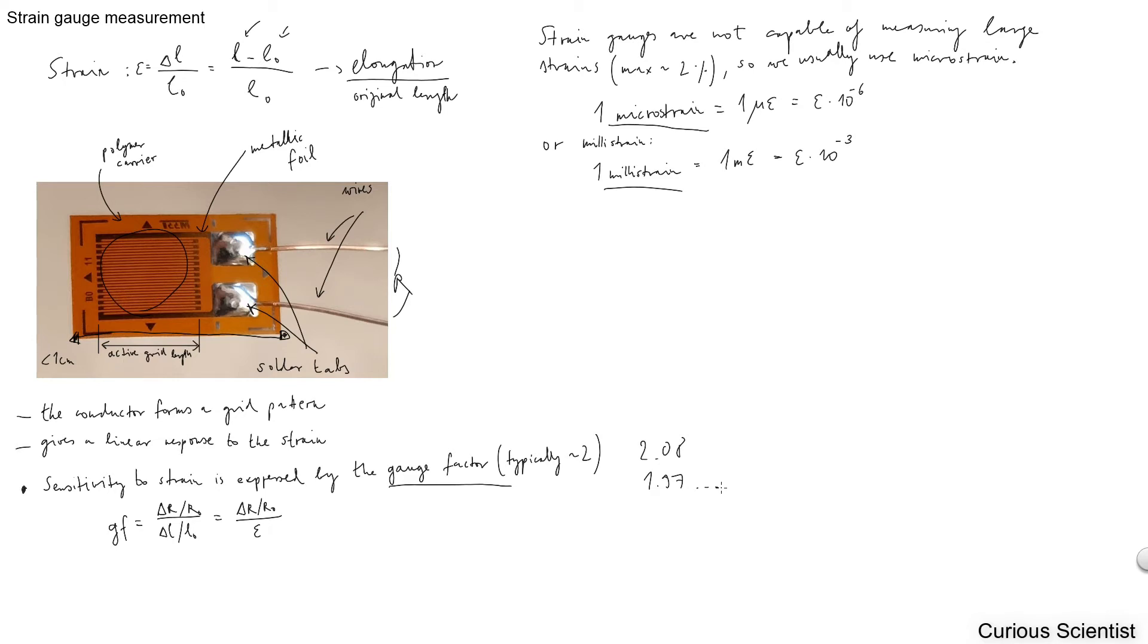Why is this gauge factor important? Because if you look at this formula, the gauge factor is basically the ratio between the change of the resistance as compared to the original resistance of the strain gauge divided by the strain. Once you have this, let's call this R star. You can rearrange this equation. Basically you divide the R star by the gauge factor, which gives you the strain. This is measured and this is provided.